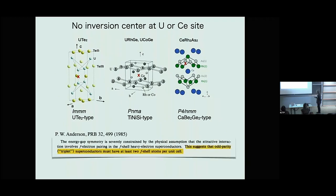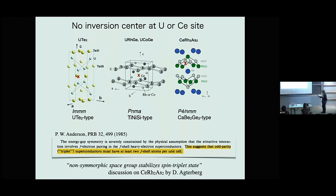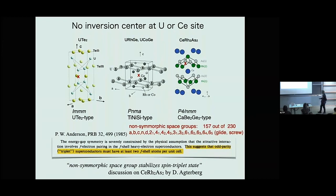This is an important point. I want to call this Anderson's statement: he suggests that all odd-parity spin-triplet superconductors must have at least two f-shell atoms per unit cell. Furthermore, as noted by Daniel Agterberg, the non-symmorphic space group stabilizes the spin-triplet state. Non-symmorphic space group means there are 157 space groups out of 230 that include glide or screw symmetry operations. For example, PNMA includes N or A — that's non-symmorphic. P4/NMM includes N, so it's non-symmorphic.